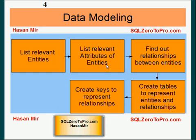For example, the employee is an entity, department is an entity, and another entity could be a warehouse of a company — which might not be relevant to the software you're writing. You might be only writing software to manage employees and departments, so you would not include the warehouse in your list of entities.